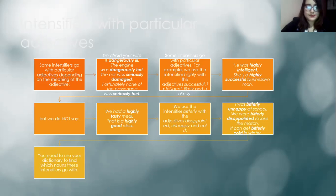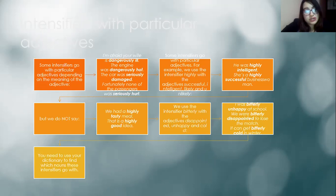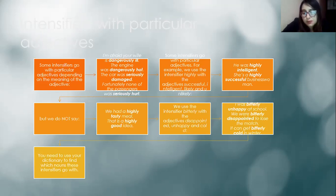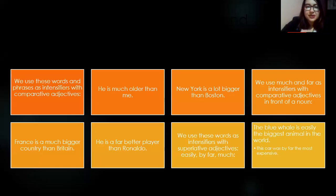We do NOT say 'a highly tasty meal' or 'that is a highly good idea.' We use the intensifier 'bitterly' with adjectives like 'disappointed,' 'unhappy,' and 'cold.' 'Bitter' conveys a sense of something painful or unpleasant. For example: 'I was bitterly unhappy at school' and 'We were bitterly disappointed to lose the match.' It's important to always use a dictionary to identify which specific nouns or adjectives a given intensifier collocates with.